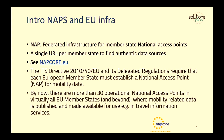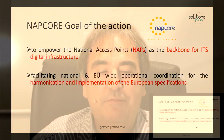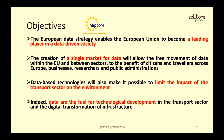The legislation requires that each member state must establish a national access point for mobility data. The work is ongoing, but many member states have established national access points, and mobility-related data is published and made available — for instance, travel information services. The goal of the action is to empower the national access points as the backbone for the ITS digital infrastructure, and to facilitate national and European-wide operational coordination for the harmonization and implementation of European specifications. There is quite a bit of ambition in this NAPCOR project.